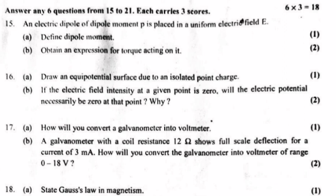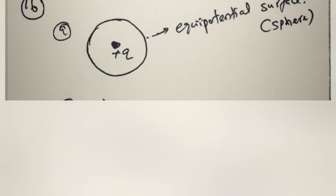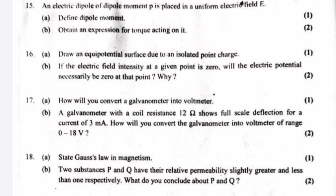Question 16 A: Draw an equipotential surface due to an isolated point charge. B. If the electric field intensity at a given point is zero, will the electric potential necessarily be zero at that point? Why? Answer B: No. Inside a charged shell, the electric field intensity is zero, but the electric potential is equal to the potential on the surface.